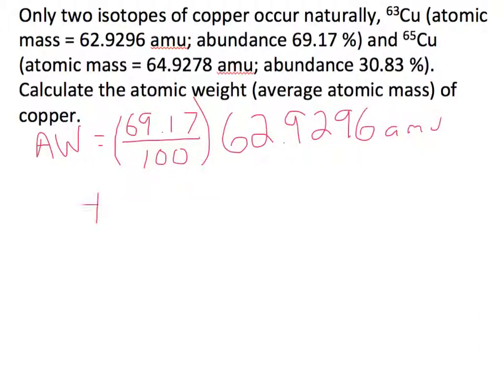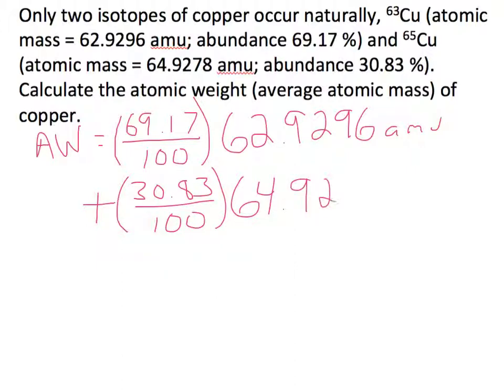We then add that to copper-65, which has an abundance of 30.83%, dividing by 100 to convert from percent, and multiply by its atomic mass of 64.9278 atomic mass units.